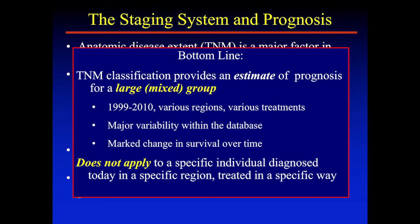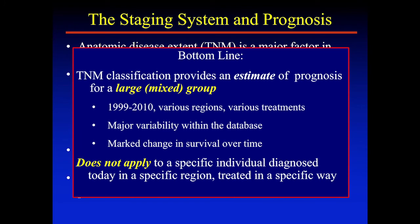The bottom line is: if you're looking to the staging system for prognosis, you're looking at data from a decade earlier — 1999 to 2010 patients from across the world — averaging out all that regional variability. You have no real idea how those patients were treated or whether they were treated the same way you're planning to treat your patient. And if there's been a 30% improvement in survival, does data from a decade ago actually reflect prognosis for your patients today? Take it with a huge grain of salt.